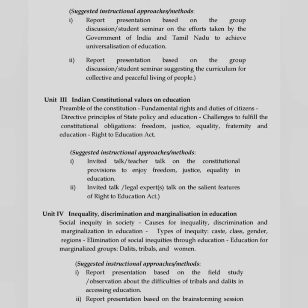Unit 3 is about Indian Constitutional Values on Education: preamble of the constitution; fundamental rights and duties of citizens; directive principles of state policy and education; challenges to fulfill the constitutional obligation — freedom, justice, equality, fraternity and education; Right to Education Act. Unit 4 is Inequality, Discrimination and Marginalization in Education: social inequity in society; causes for inequality, discrimination and marginalization in education; types of inequity — caste, class, gender, region; elimination of social inequity through education; education for marginalized groups — Dalit, tribals and women.